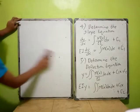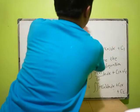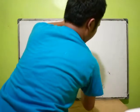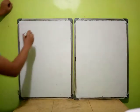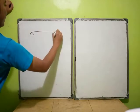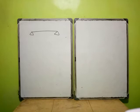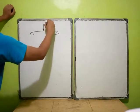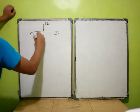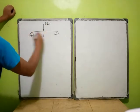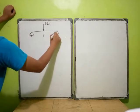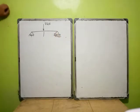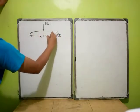Let us start with the easiest example. Let us try with a beam. Let us say that this beam has a point load of 8 kilonewtons located at the center of the beam. Let us say that this is a simply supported beam — one end is pinned, the other is a roller. The beam is 4 meters on each side.